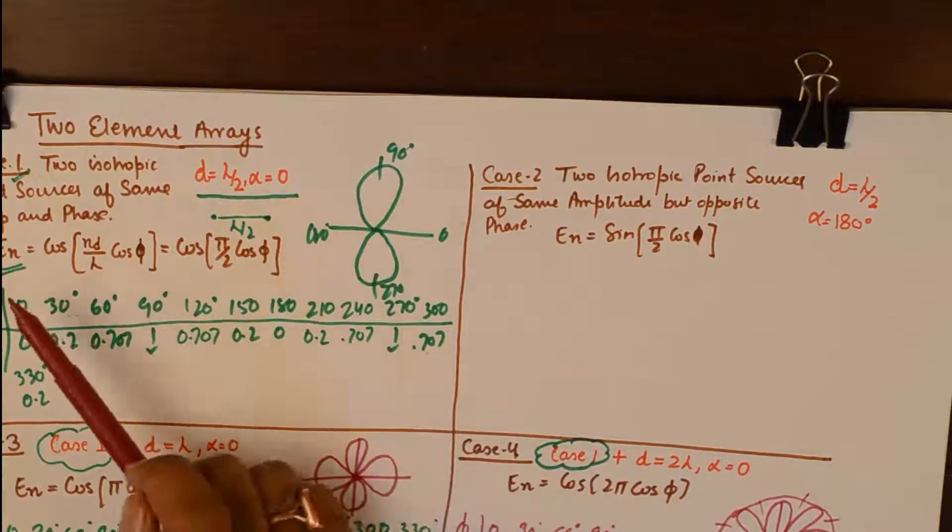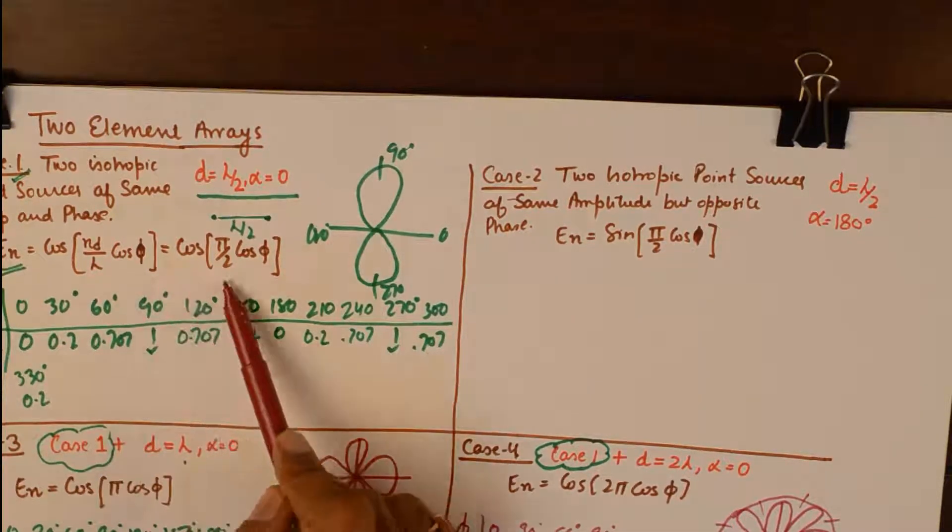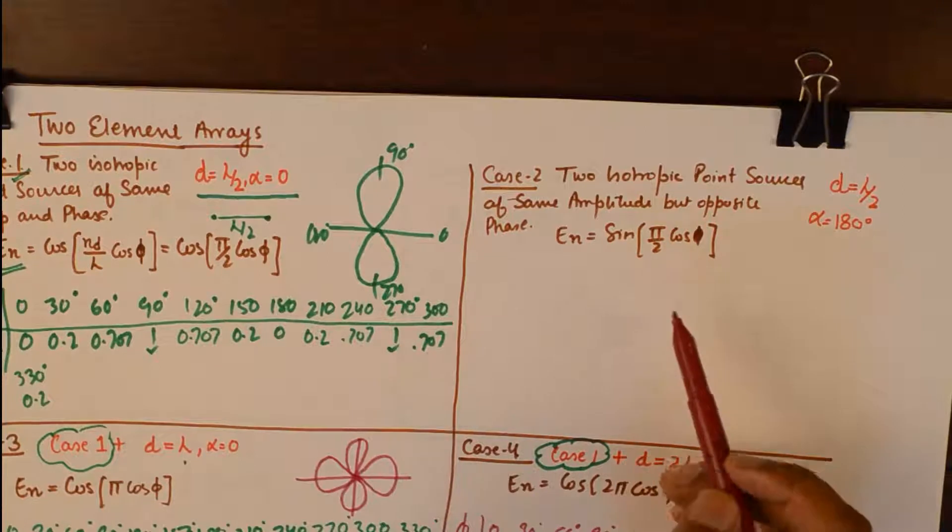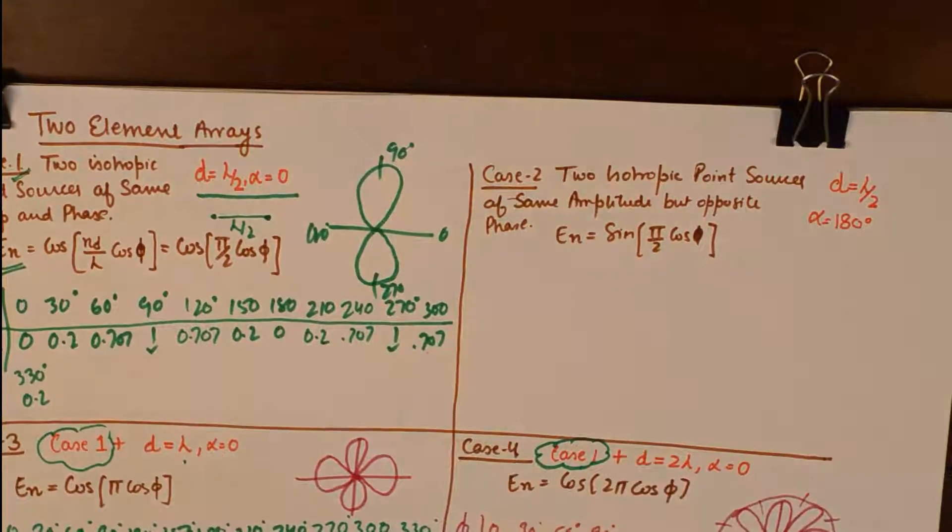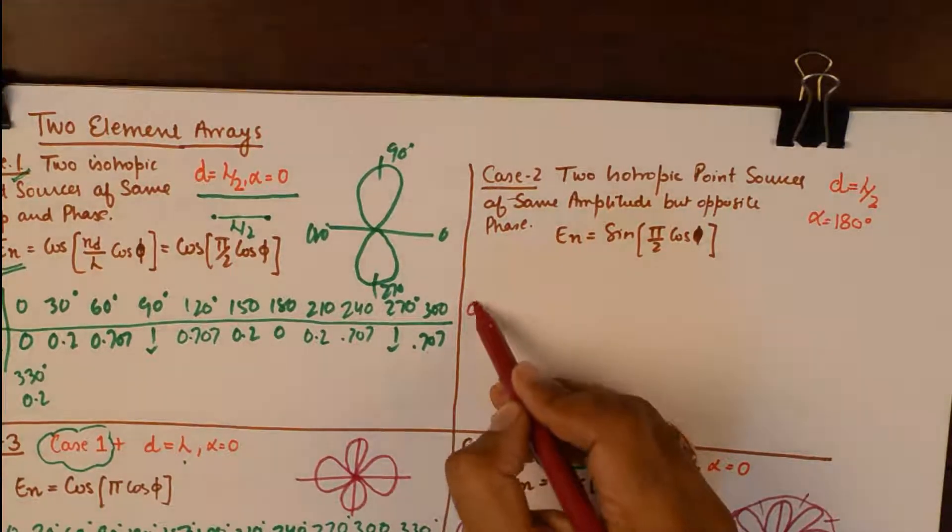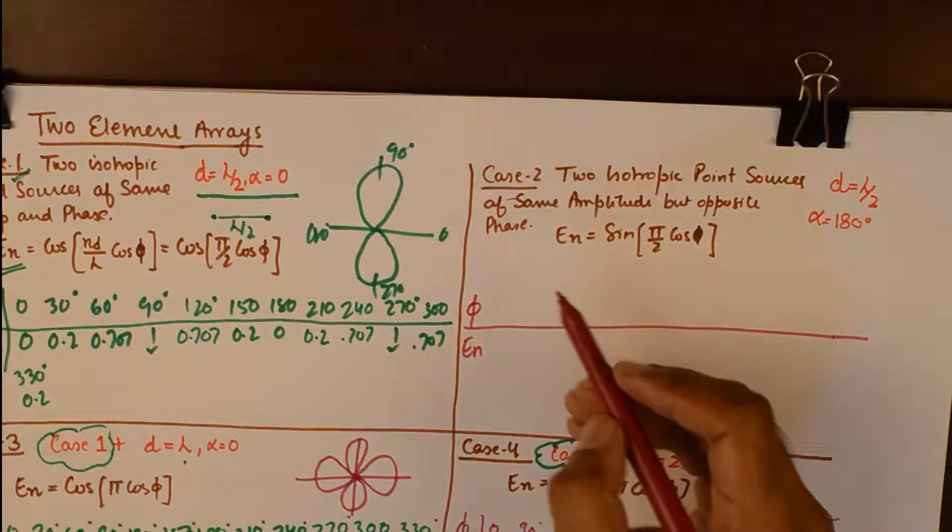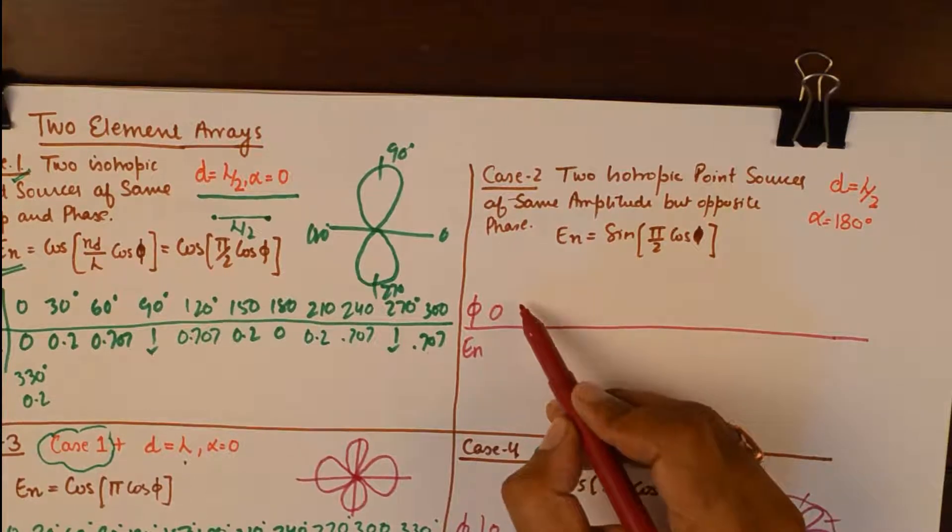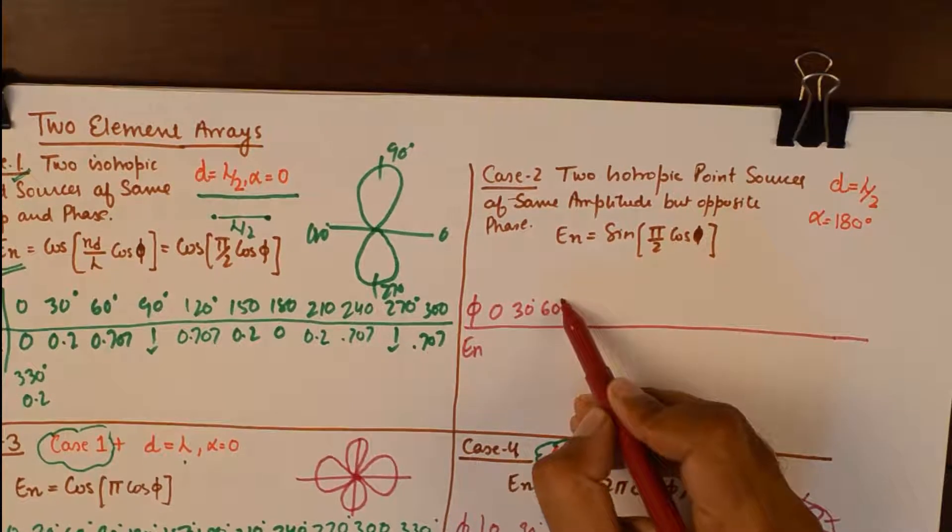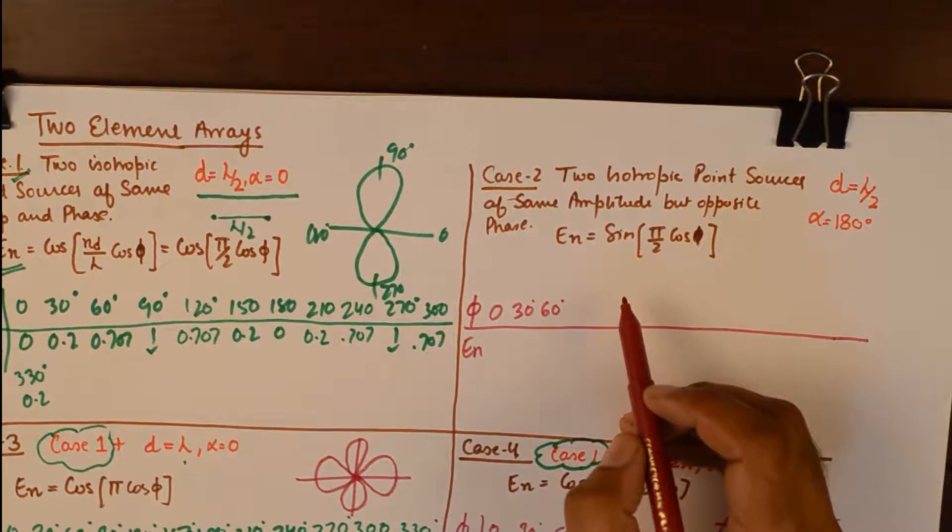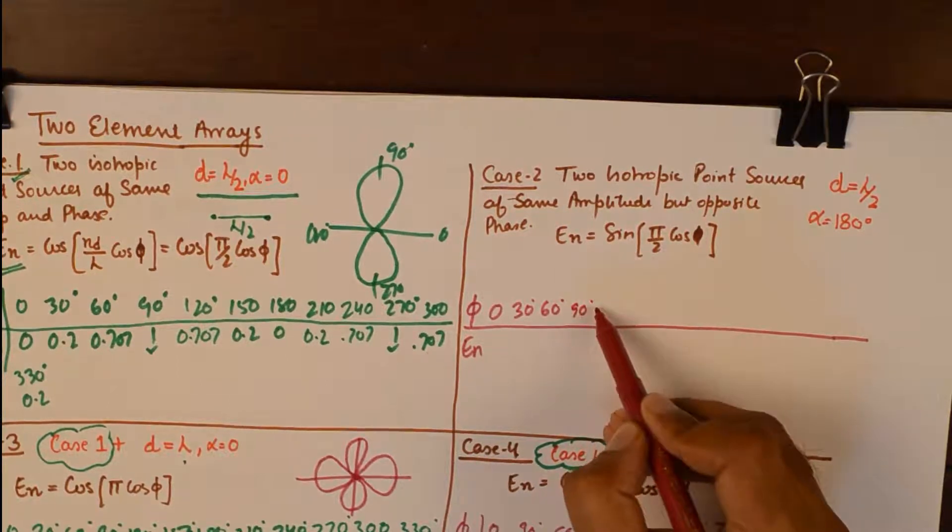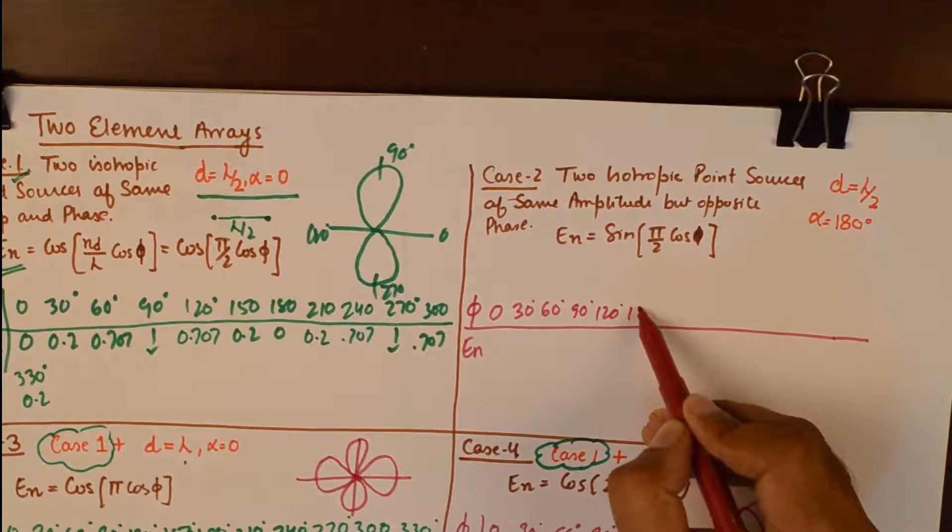Now if you observe the difference, in broadside it was cos of pi by 2 cos phi, which will make the table of phi and En exactly opposite of that of the broadside array.